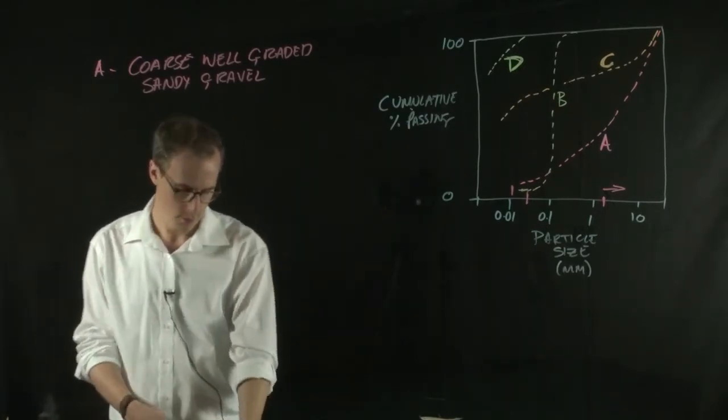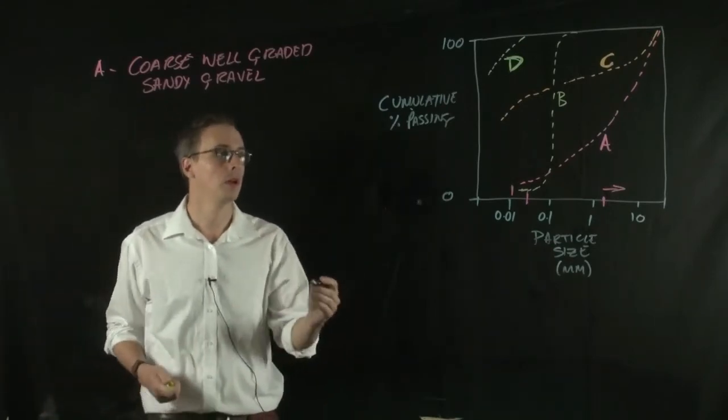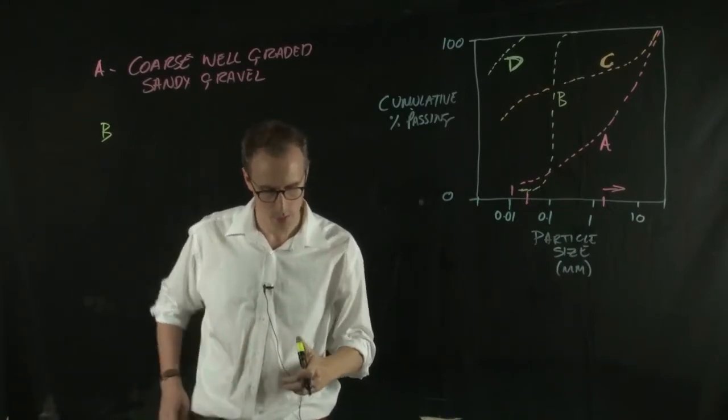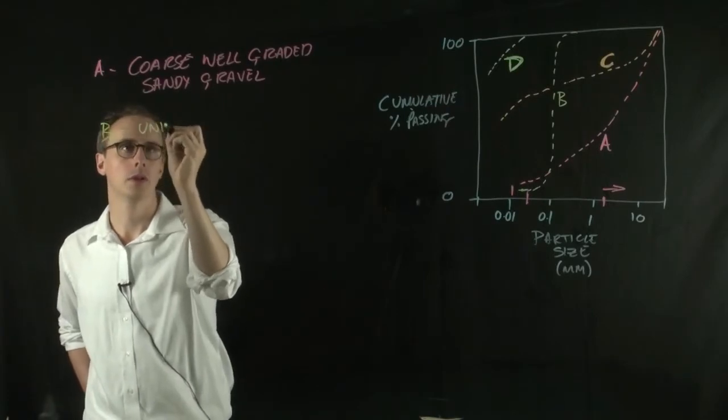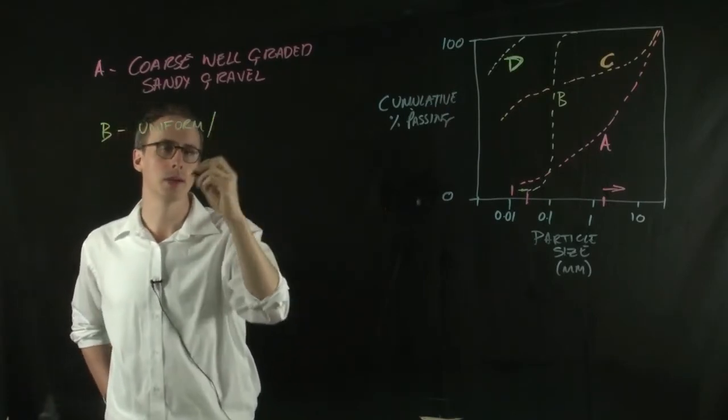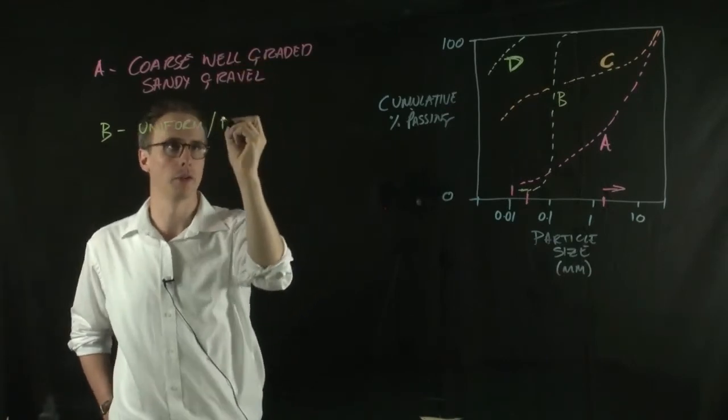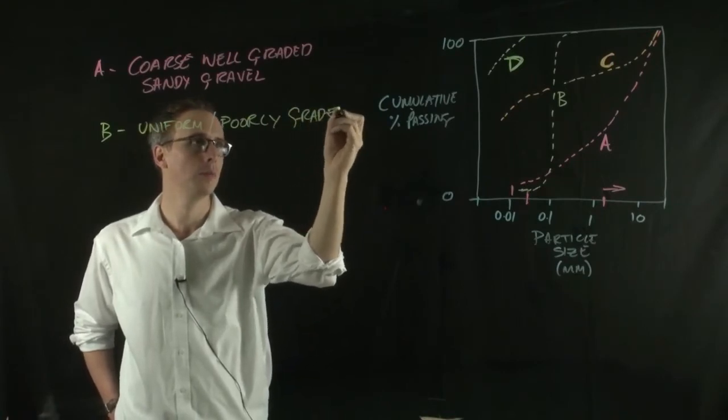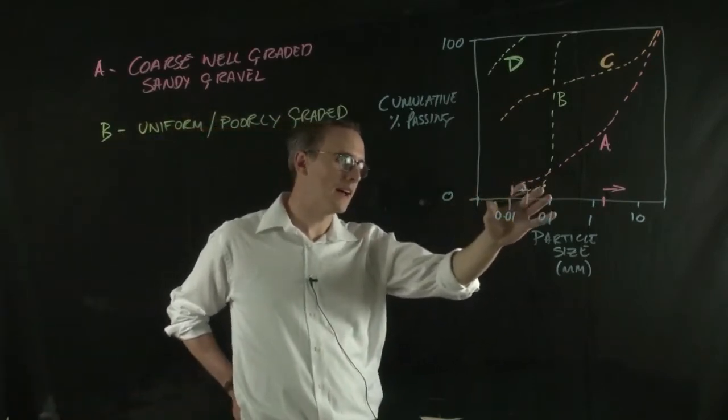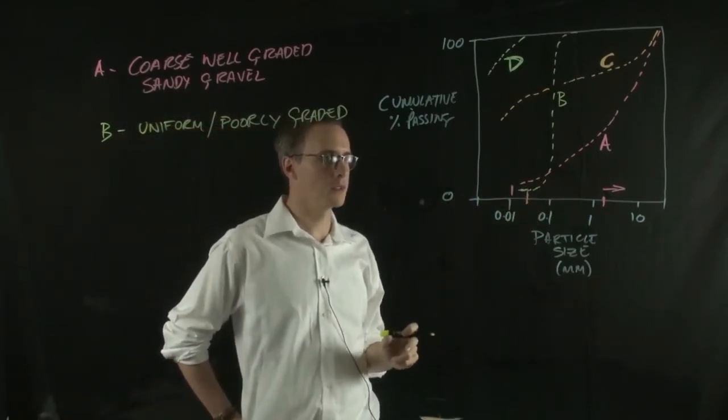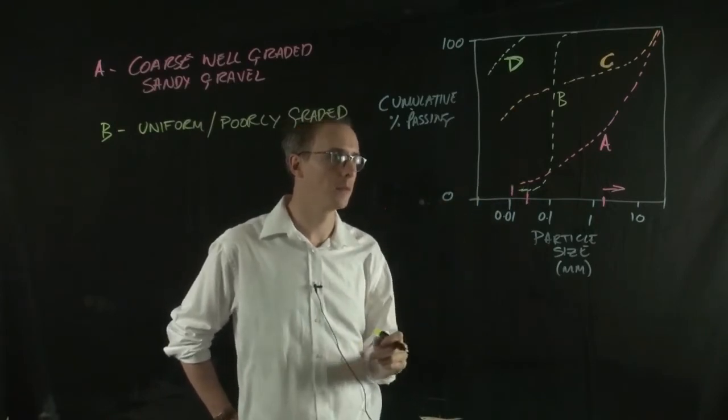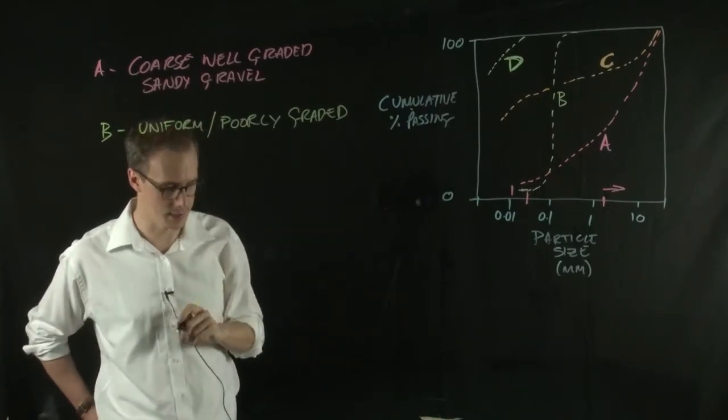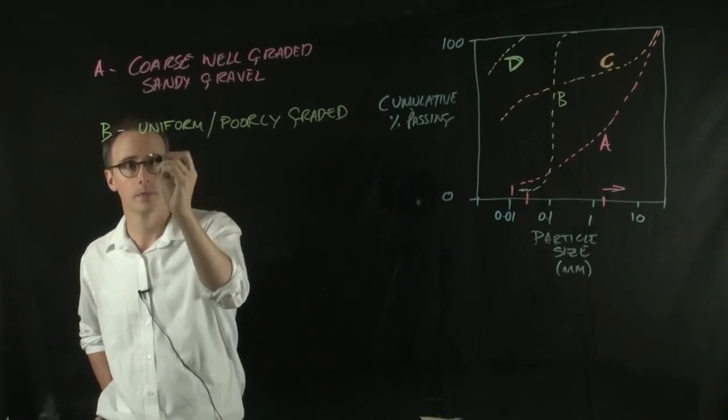Line B, you can see that all of the size fraction exists within the sand, so you can say that you've got a uniform or sometimes that's called poorly graded sand. It might be either a sand or, if we've got some of the size fraction within the silt classification, then it might be a very slightly silty sand.